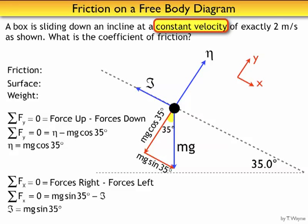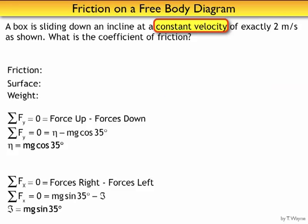Now it's time to start doing some algebra. I'm asked to find the coefficient of friction, but the problem is I don't have a coefficient in any of my equations. But I do know a formula with it: friction is equal to mu times eta. So now I've got mu. Now I've got to put an expression in for friction and one for eta. I've got one for friction, that's mg sine 35, equal to mu. And I've got an expression for eta, that's mg cosine 35. So mg sine 35 equals mu times mg cosine 35.